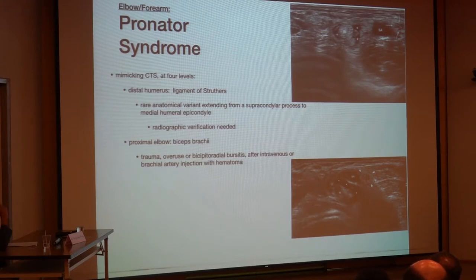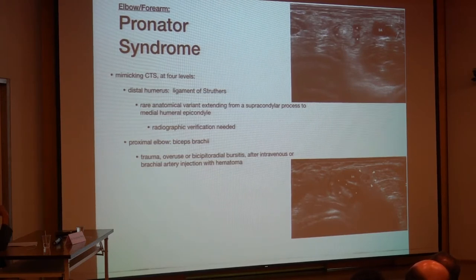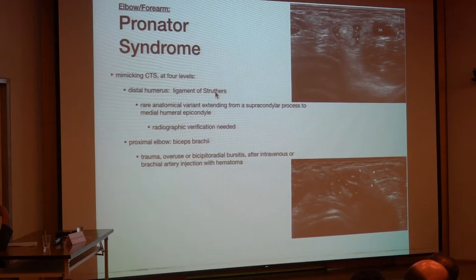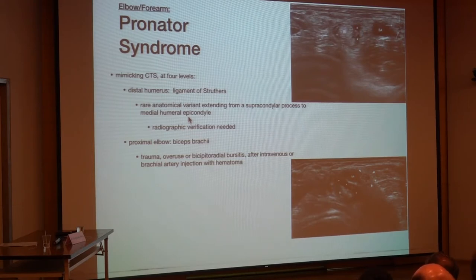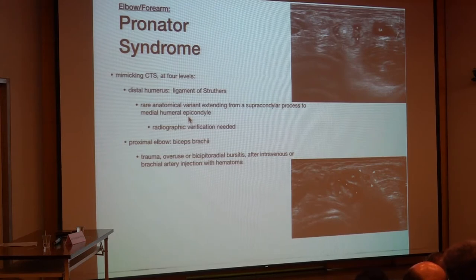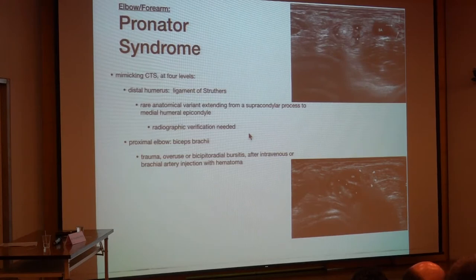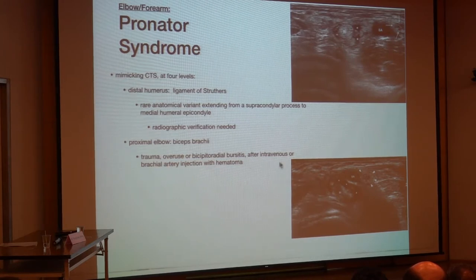Moving to the pronator syndrome, which is a mimicker of carpal tunnel syndrome: it can take place at four levels. Distally at the humerus, it is caused by the ligament of Struthers, a very rare anatomical variant that goes from the supracondylar process to the medial humeral epicondyle — radiography is very helpful to see this bony spur. At the proximal elbow, it occurs due to bicipital aponeurosis involvement, which can be caused by trauma, overuse, a bicipital radiobursitis, or a hematoma.